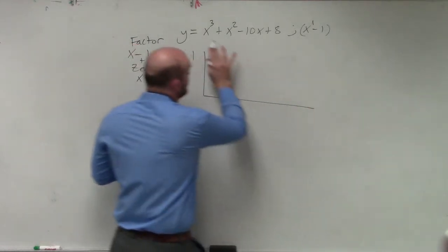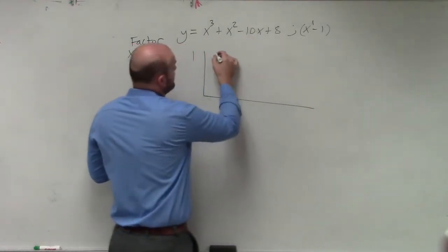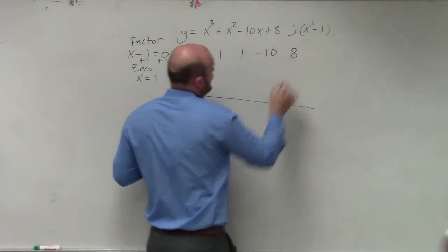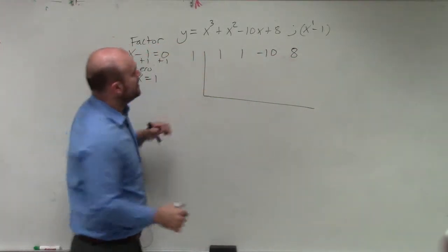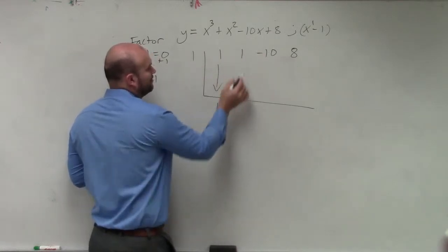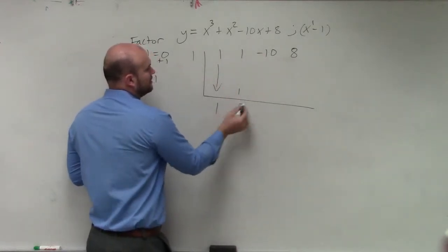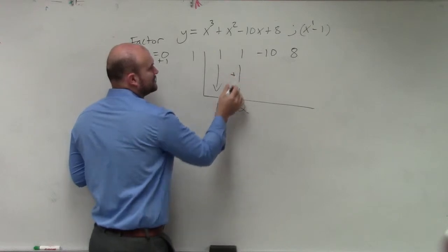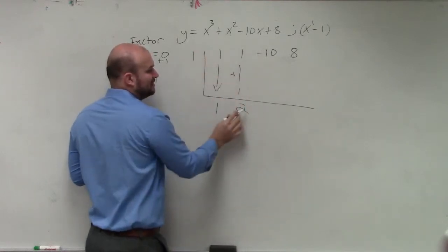So we have 1. Then we take the coefficients of each of our terms, 1, 1, negative 10, and 8. So bring down the first term, 1. 1 times 1 is 1. 1 plus 1 is 2. So we add vertically, multiply diagonally.